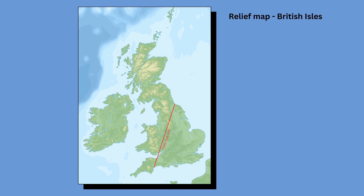The Tees-Exe line is an imaginary line between the River Tees in the north-east and the River Exe in the south-west. It helps us to describe where the upland and lowland regions are in the UK. To the north and west are the uplands of England, Wales and Scotland. South and east of the line are the lowlands of central and southern England.